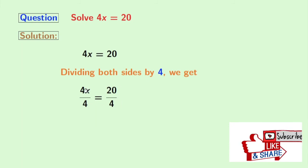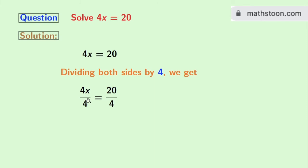Now look, in the left hand side we have 4 in both the numerator and the denominator. So we are left with x, and in the right hand side we have 20 by 4, which is 5.